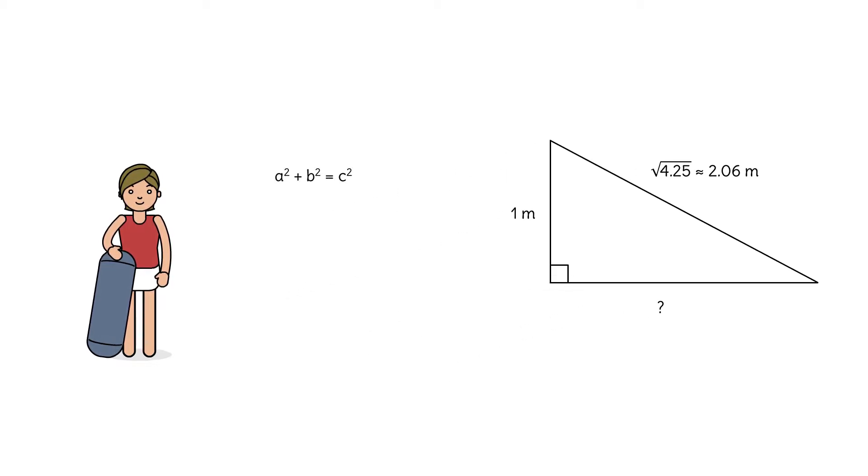We can use the Pythagorean theorem again. a is 1. The remaining leg is b, our unknown. The hypotenuse c is √4.25. 1² is 1. What is the square of √4.25? 4.25. Subtracting gives us b² = 3.25. To solve for b, we take the square root of 3.25, which gives us approximately 1.8 meters.